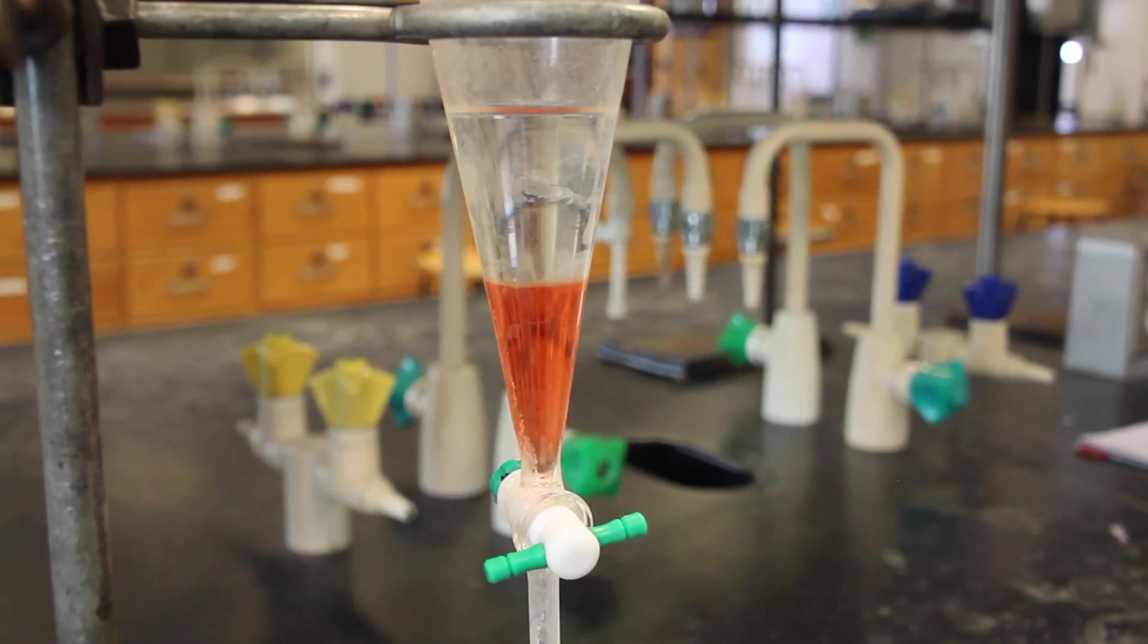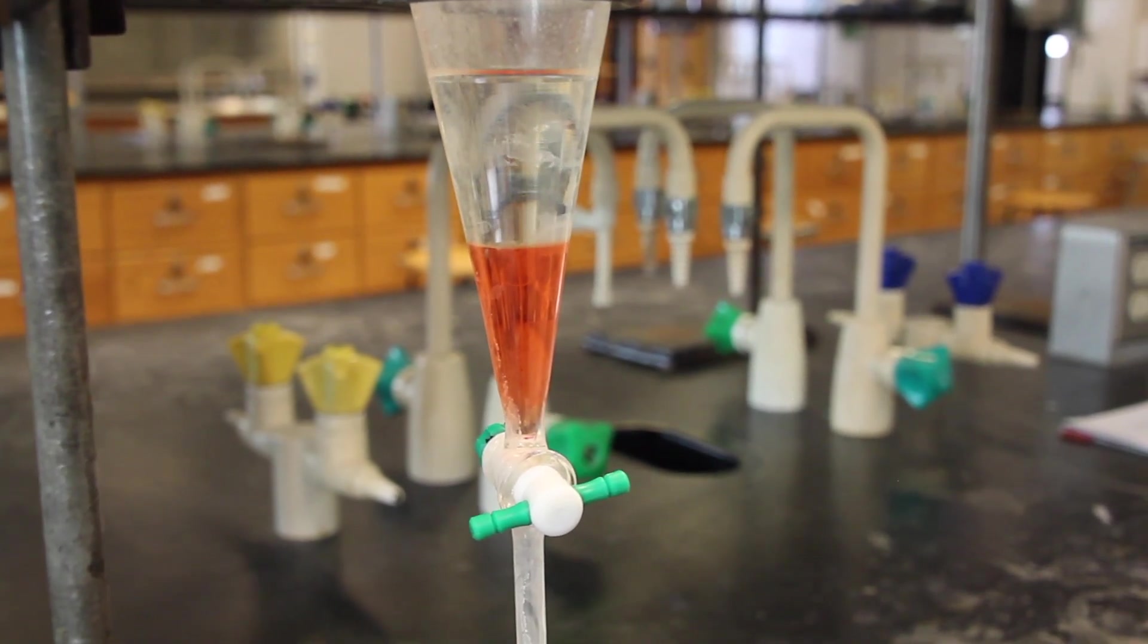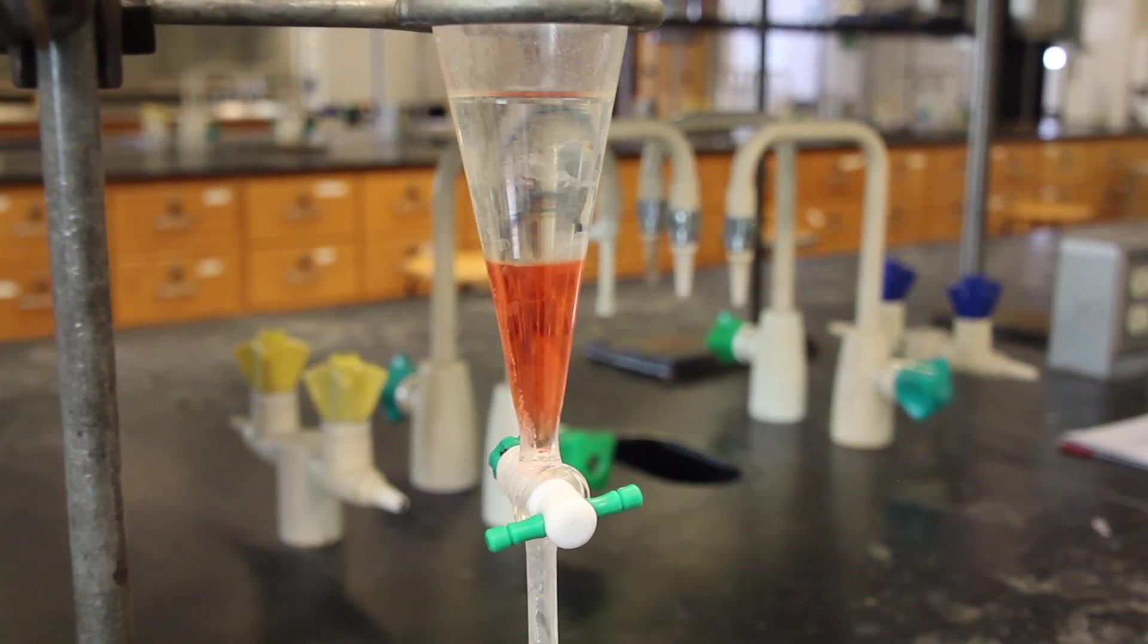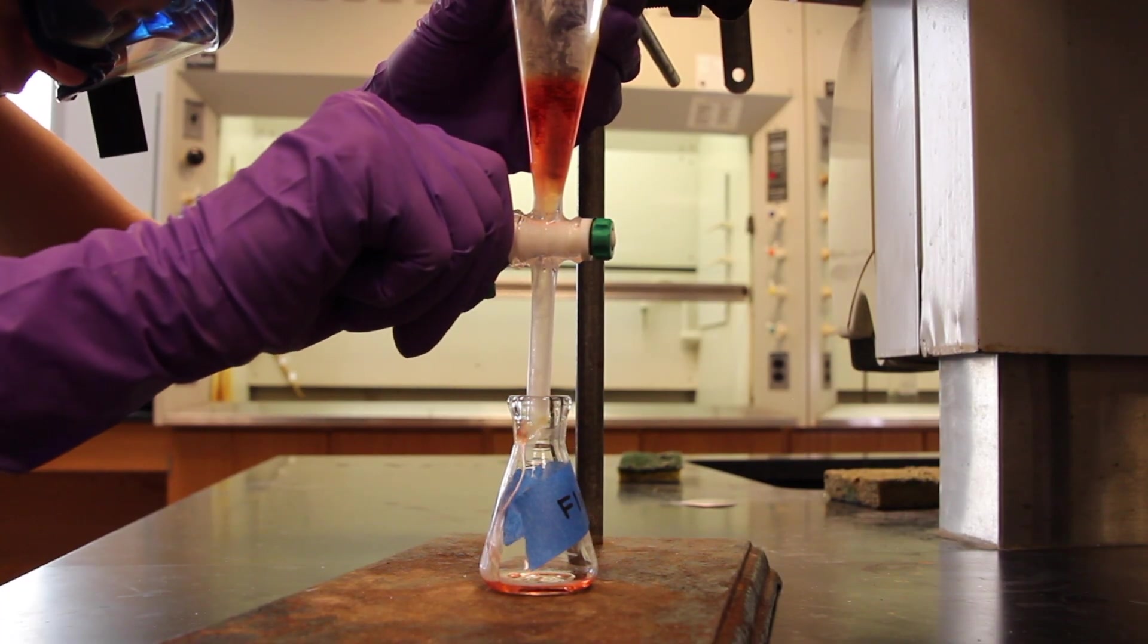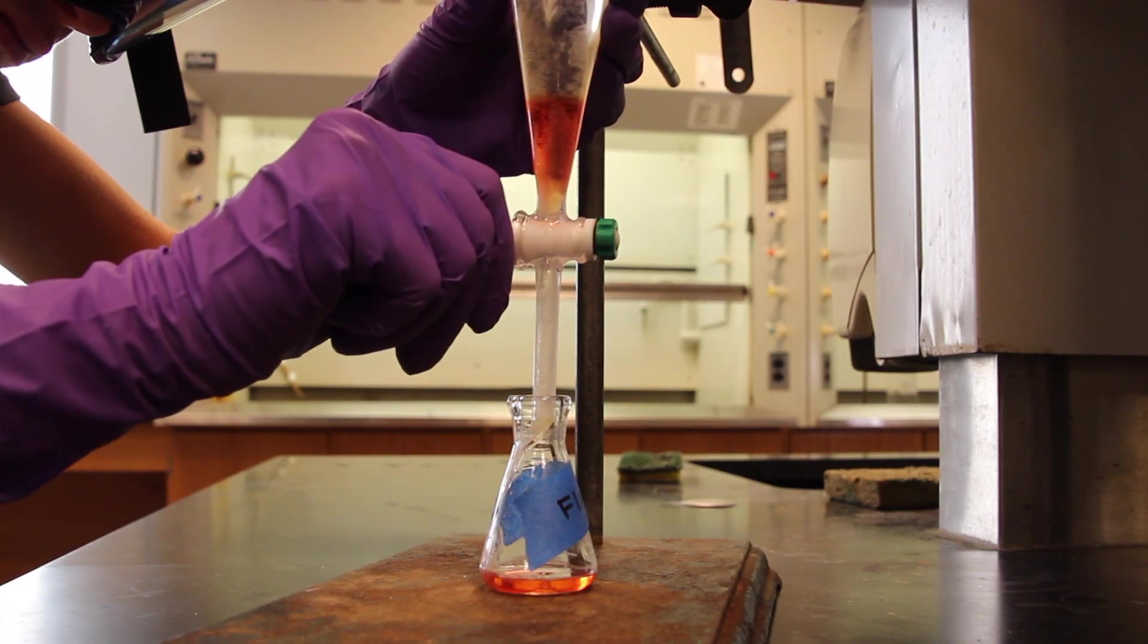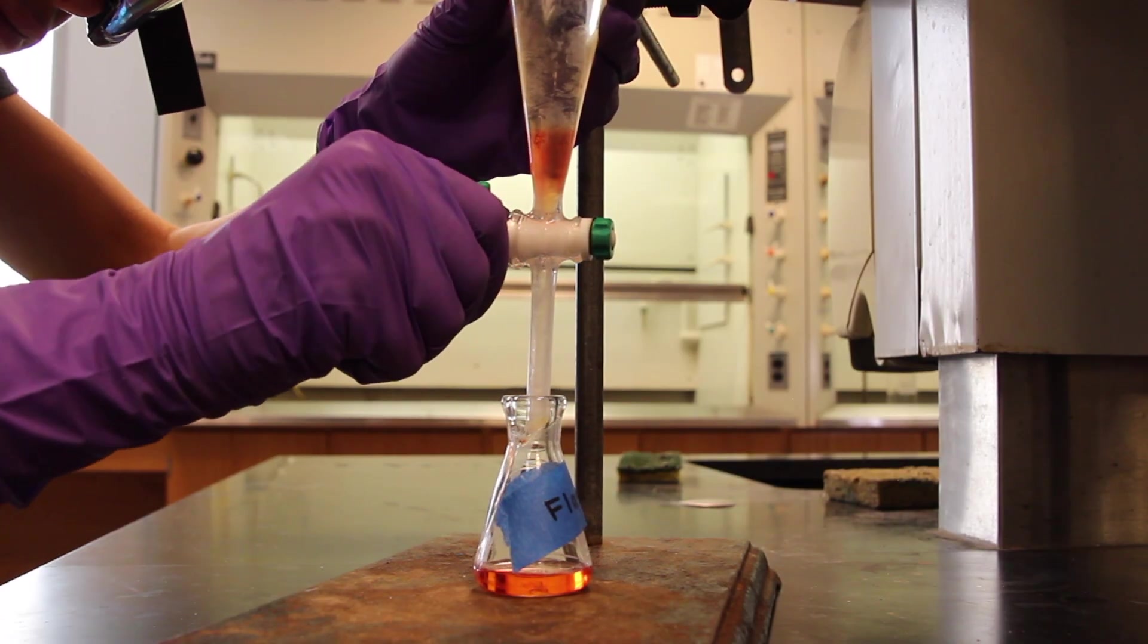Extraction of the ether solution with HCl will cause any organic amine to move into the aqueous layer, leaving any organic acid or neutral compounds behind in the organic layer. Drain off the lower layer into a 25 milliliter Erlenmeyer flask labeled Flask 1. Remember, do not discard any layers until the end of the experiment.